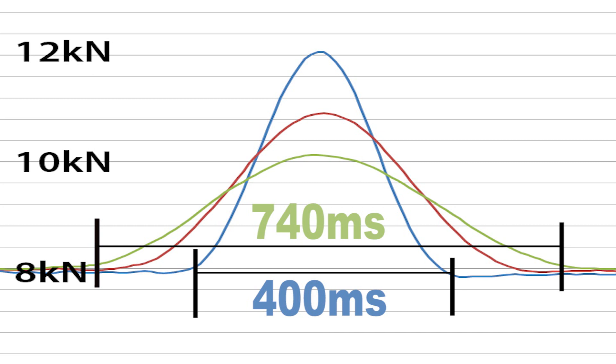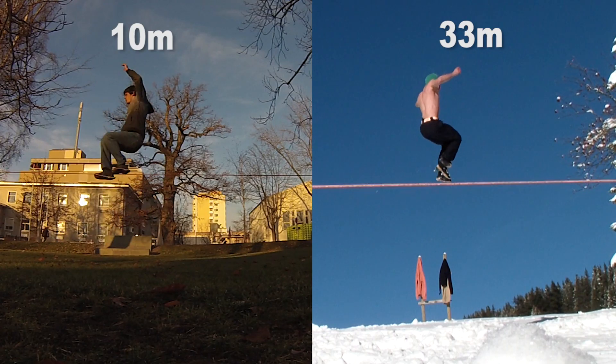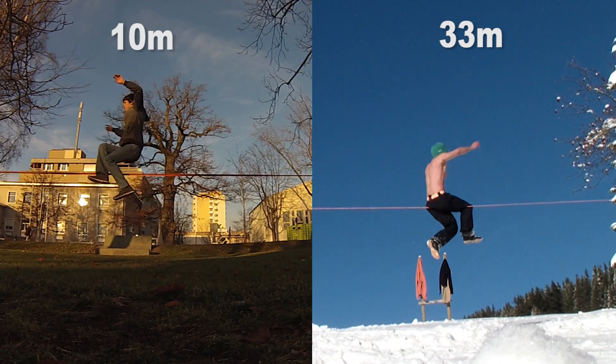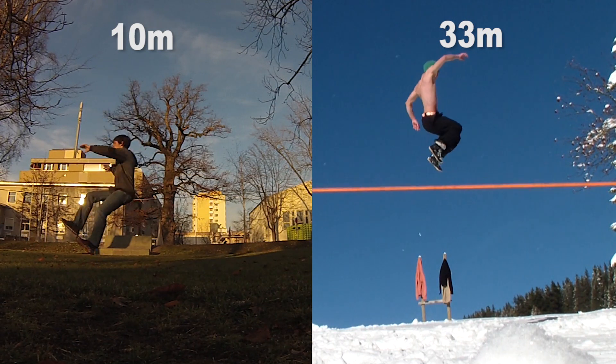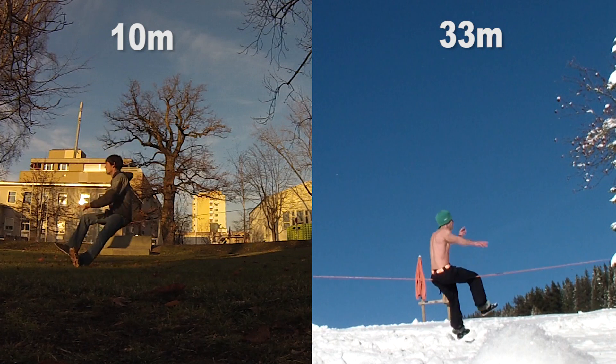So the whole energy is distributed on a bigger time, which also decreases the force. A very important thing for the body here is that as it takes twice as long to make the butt bounce, also the force acting on the body is divided by 2 on the longer slackline.